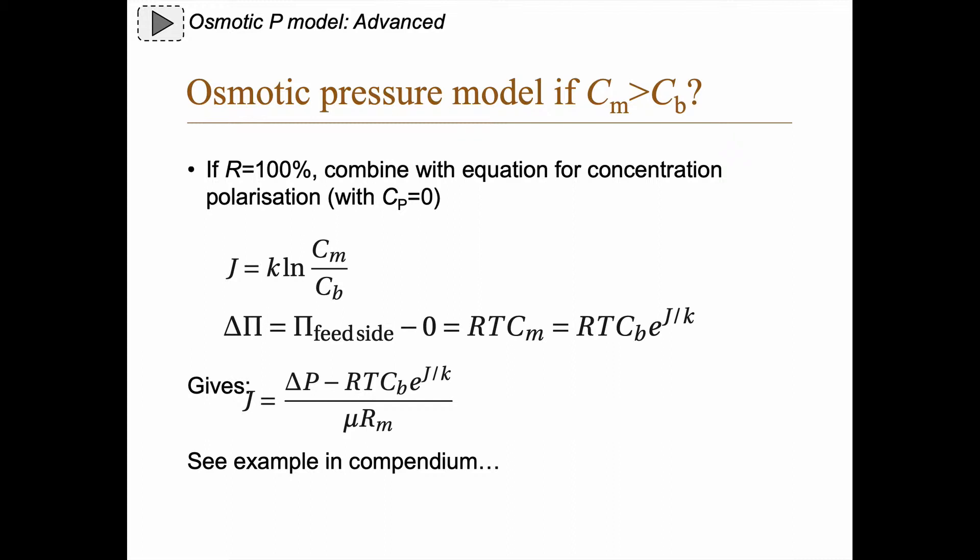The concentration polarization model taught us that. So how do we combine these two? Well, if the retention is 100%, it's rather simple to combine them because then the concentration in the permeate will be zero.